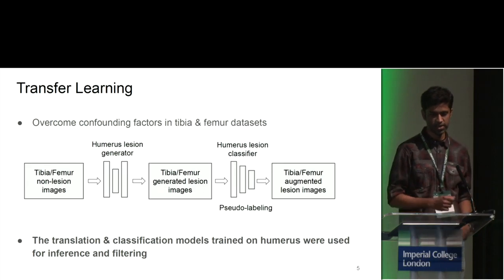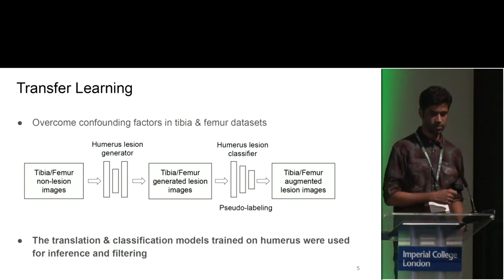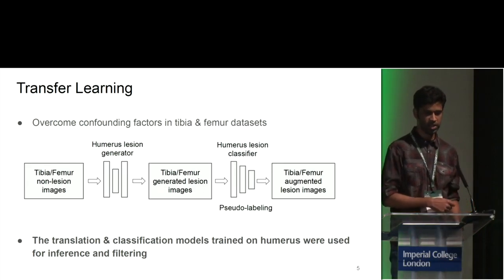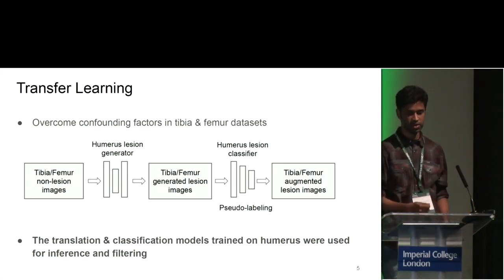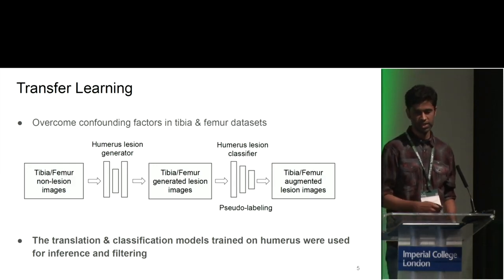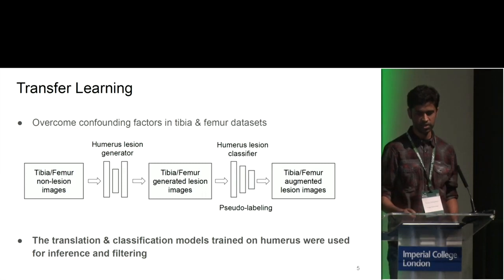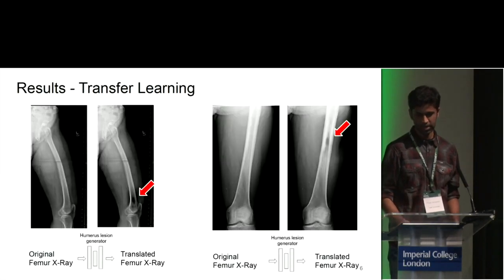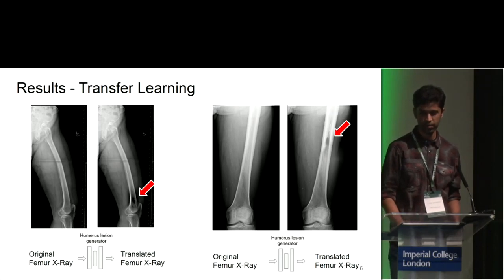What we realized was that learning from one body part translates really well to other body parts. In most of our cases, learning from humerus transfers well to other body parts such as tibia and femur, and that's what we did. These are some qualitative examples of this transfer learning process on other body parts.